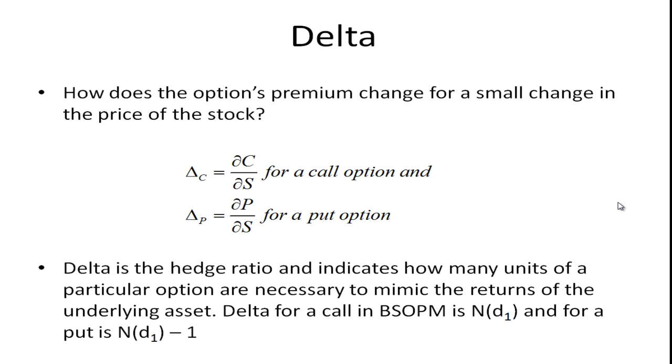It turns out that delta for a call option in the Black-Scholes option pricing formula is N(d1). And it turns out that for a put, it's N(d1) minus 1. And you may recall, d1 is a calculation that's done, and the N stands for the cumulative normal, standard normal distribution. So you would calculate d1, you'd look it up on a normal distribution table, and figure out what N(d1) is.